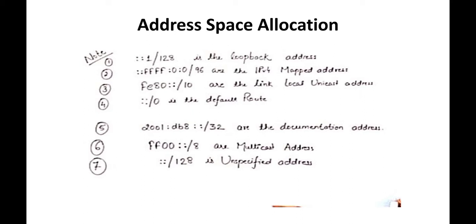If a computer does not have a manually configured address, at that time you can auto-generate the IPv6 address. If IPv6 version is enabled, then you can perform auto-generation of IPv6. This is used to auto-generate the IPv6 address using the FE80::/10 prefix.